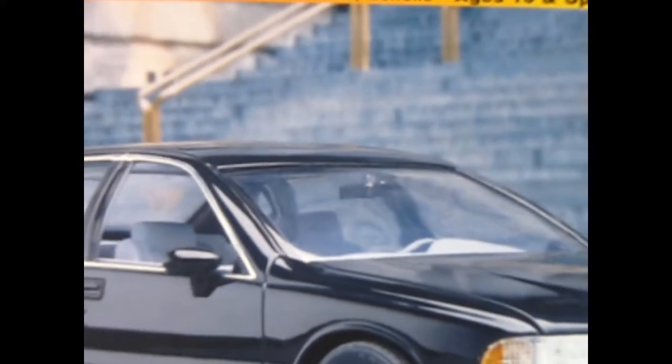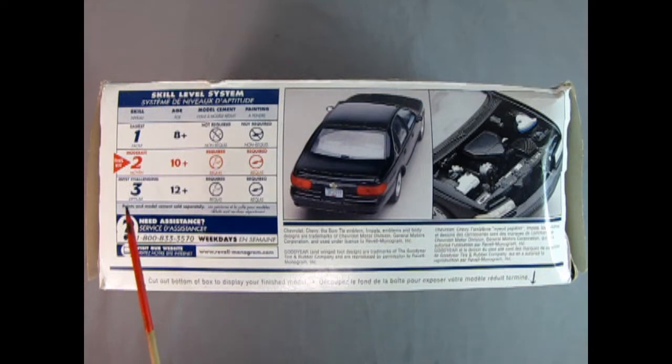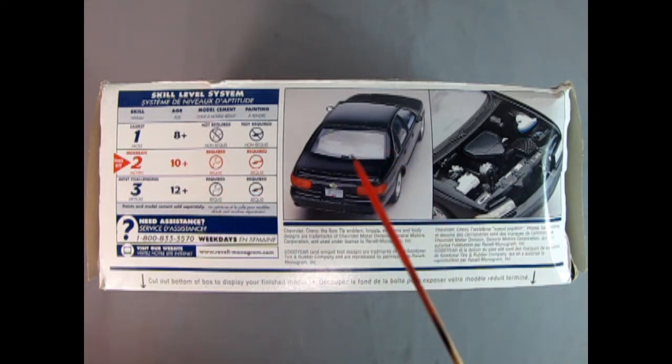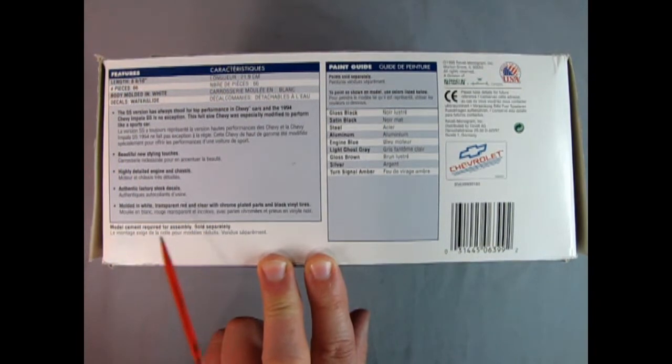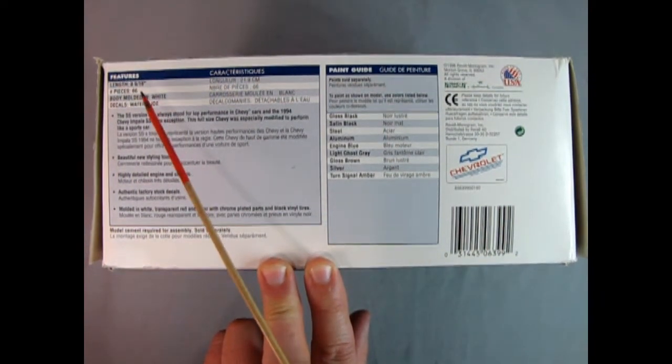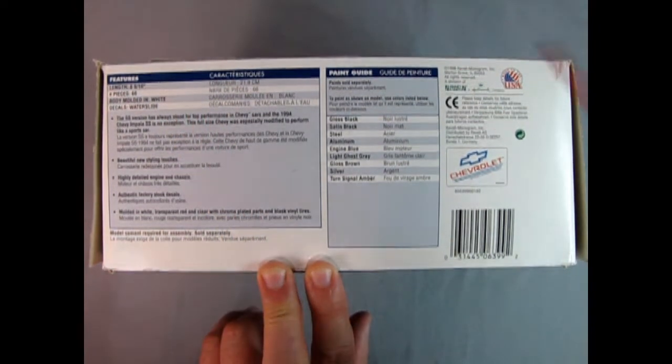Now we're going all the way back to 1996 as we check out Revell Monogram's 1996 Chevrolet Impala SS. On this side of the box we can see the skill level rating. This is a skill level 2 kit for ages 10 and up. Will require glue and paint. And here we have an upper rear three-quarter shot of the back end of our car. There's that Illinois license plate in there. And here we have underneath the hood and you can see all the great detail including where the decals go. On this side of the box we can see all the wonderful write-ups for the car. It is 8 and 9 sixteenths inches long, 66 pieces, body molded in white and has water slide decals.